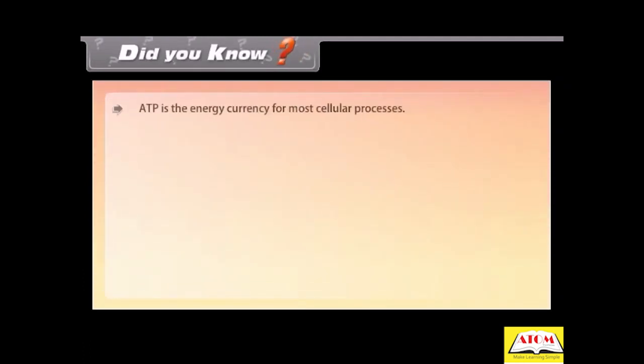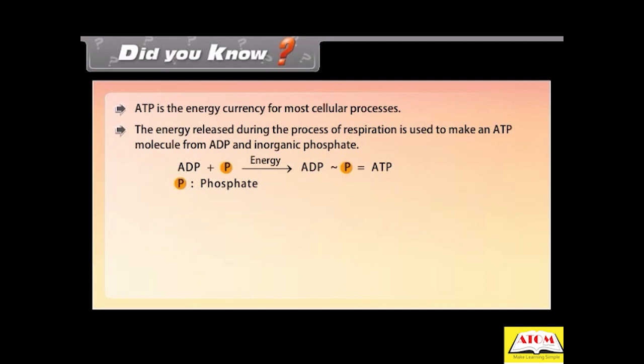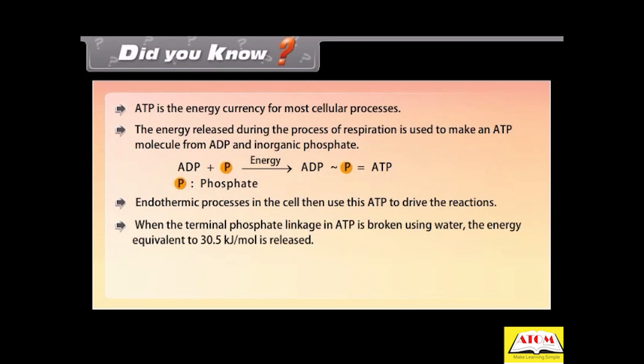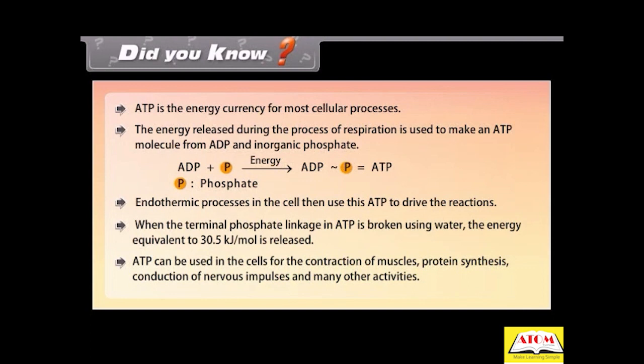Did you know, ATP is the energy currency for most cellular processes. The energy released during the process of respiration is used to make an ATP molecule from ADP and inorganic phosphate. Endothermic processes in the cell then use this ATP to drive the reactions. When the terminal phosphate linkage in ATP is broken using water, the energy equivalent to 30.5 kilojoules per mole is released. ATP can be used in the cells for the contraction of muscles, protein synthesis, conduction of nervous impulses, and many other activities.